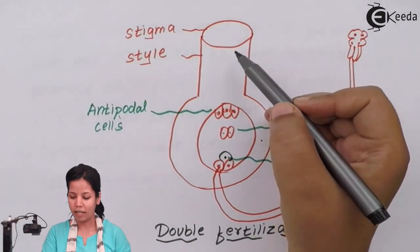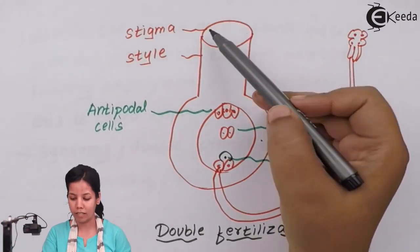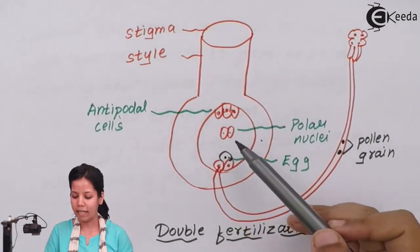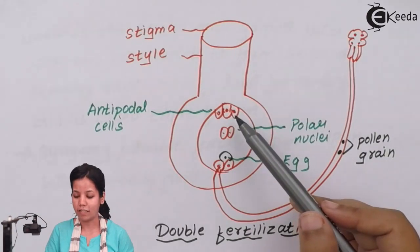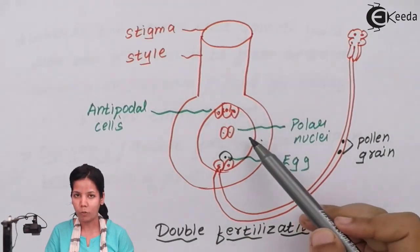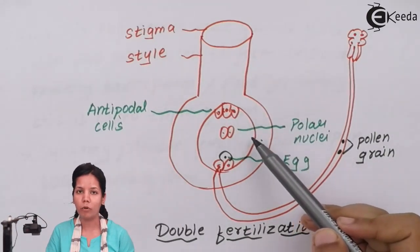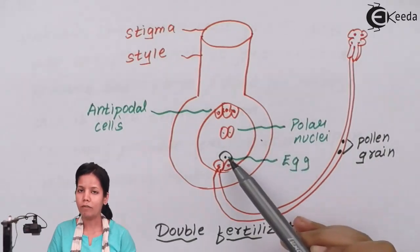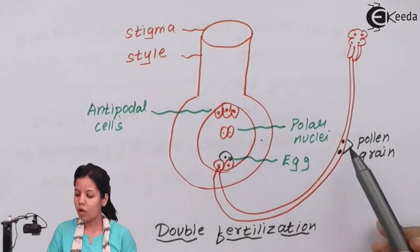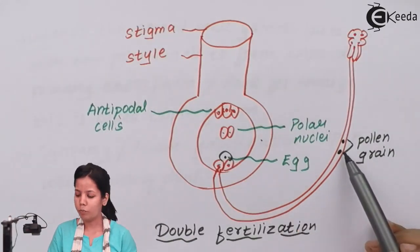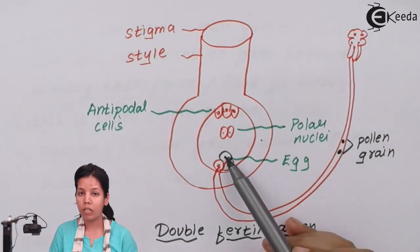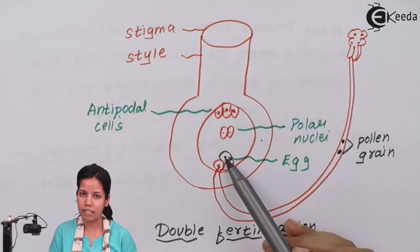As you can see in the diagram, this is the female gametophyte which consists of the stigma, style, and ovary. Inside this there are antipodal cells, which are accessory cells. The two polar nuclei will form the triploid primary endosperm, and it also consists of egg cells. During double fertilization, one pollen grain fuses with the egg cell to form the zygote, and this process is called syngami.